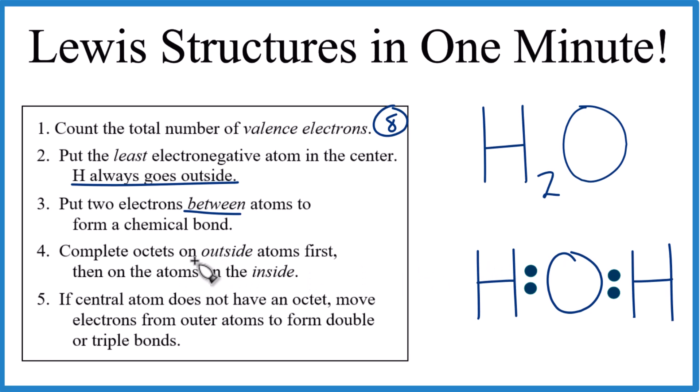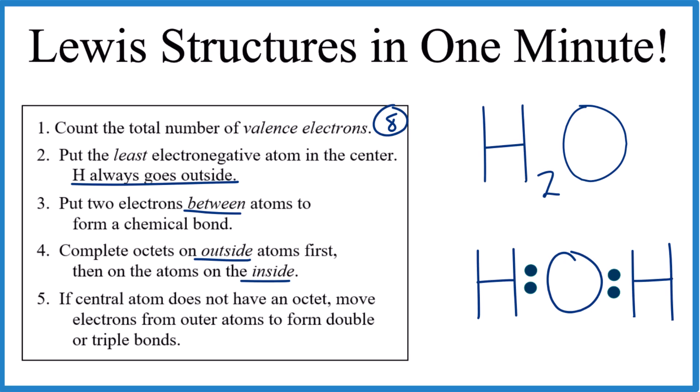We then complete the octets on the outside. But the thing is, hydrogen only gets two, so we're done with these hydrogens. Then we do the inside. We're trying to get an octet. And that's it.